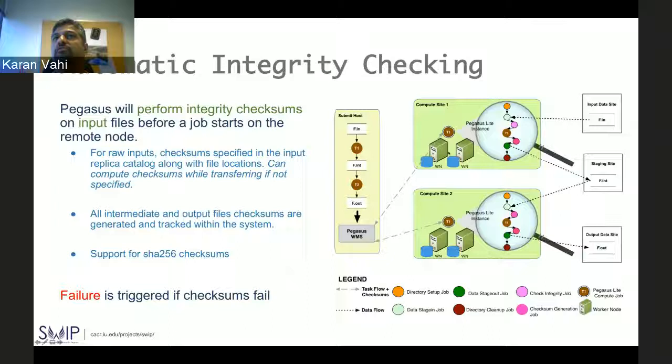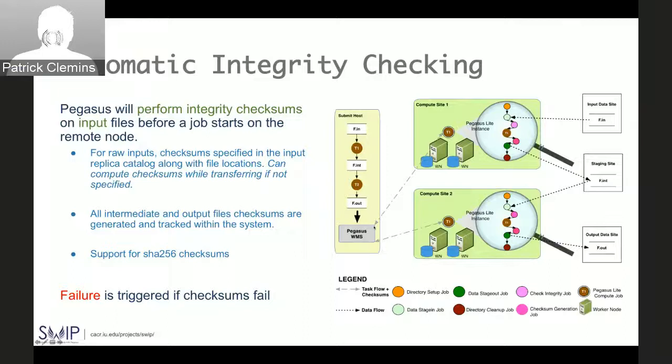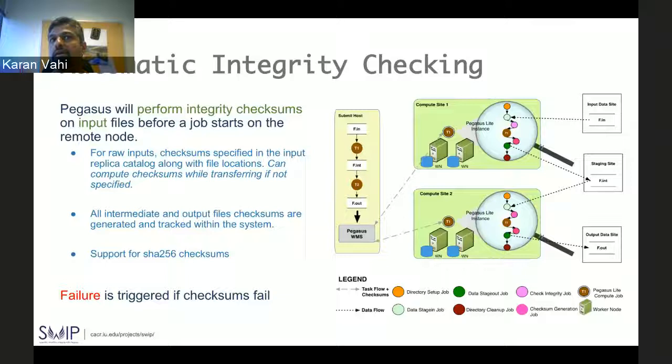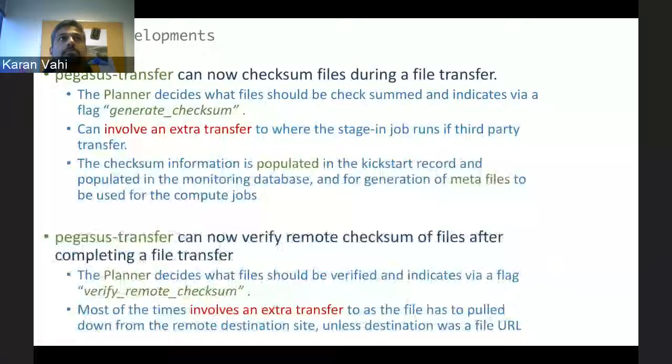When a job completes, before pushing data out to the staging server, we compute checksums for the newly formed data products. All checksum information is staged back to the workflow submit host so it can be recorded in our provenance catalog and made available for subsequent jobs. When a job starts, checksum information for its inputs is sent over via Condor file IO, and when a job completes, information about checksums for newly generated data products is brought back using built-in Condor file transfer.